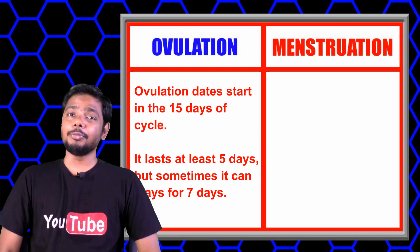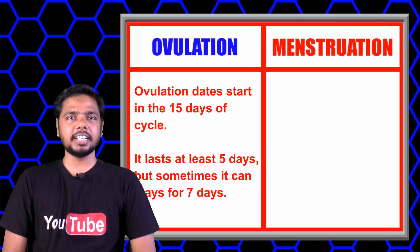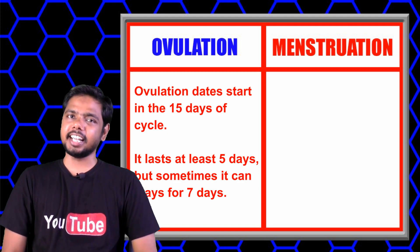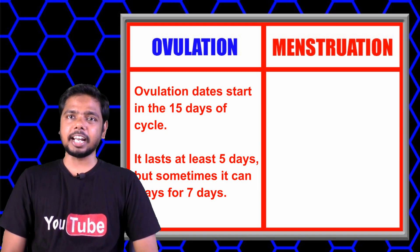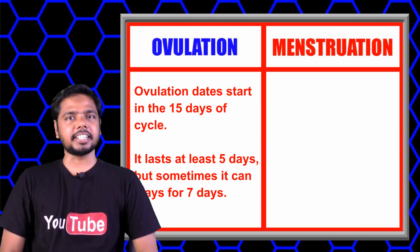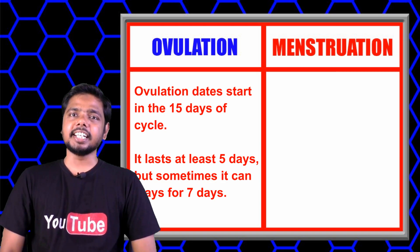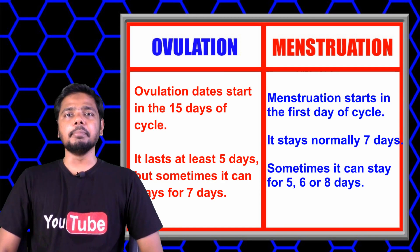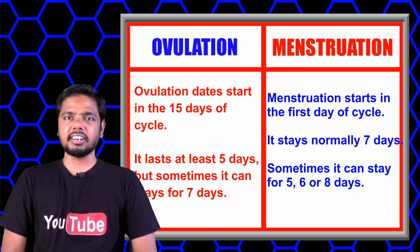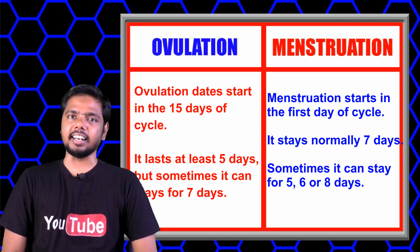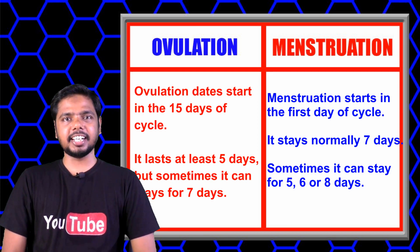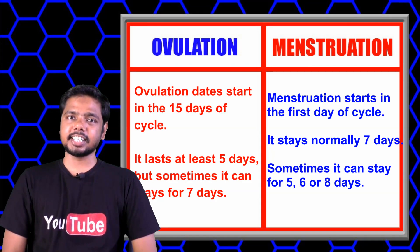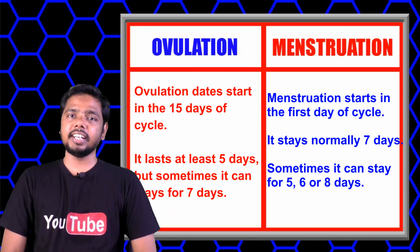Normally, ovulation starts around day 15 of the women's cycle. It lasts at least 5 days, but sometimes it can last 7 days. Menstruation starts on the first day of the women's cycle and normally lasts 7 days, but sometimes it can be 5, 6, or 8 days.